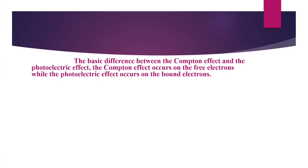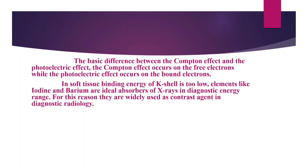The K shell has more binding energy since it is close to the nucleus. The soft tissue binding energy of the K shell is too low. Elements like iodine and barium are ideal absorbers of X-ray in the diagnostic energy range. Iodine is a contrast agent given for IVP and CT. For GI studies, barium is used. These are given as contrast agents since they are excellent absorbers of X-ray in the diagnostic energy range.